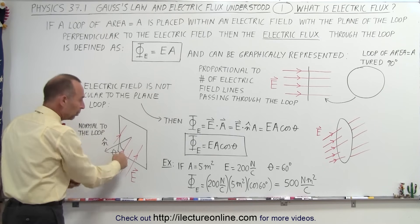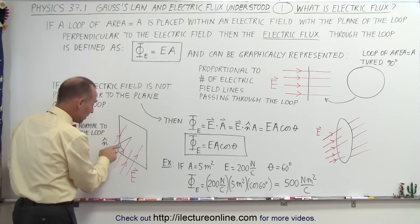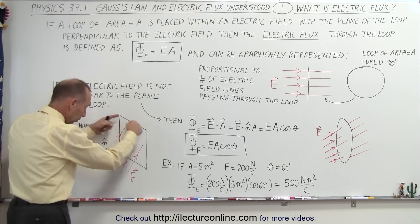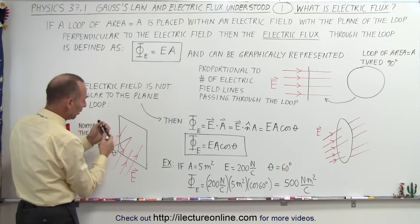Here we have drawn a loop, and it doesn't have to be a round loop, it can be a square loop. This vector pointing straight out from the loop, from the area, this vector is perpendicular to the plane. So here's the n vector, perpendicular to the plane.